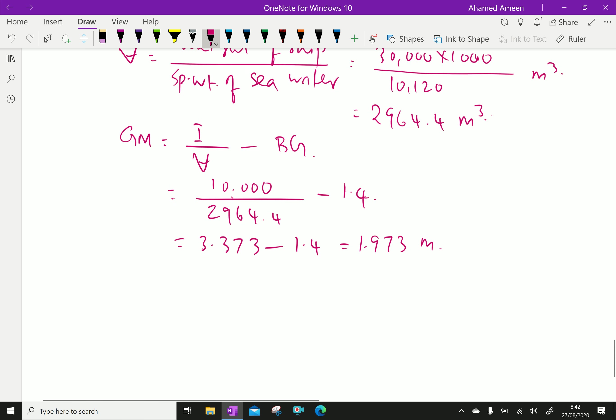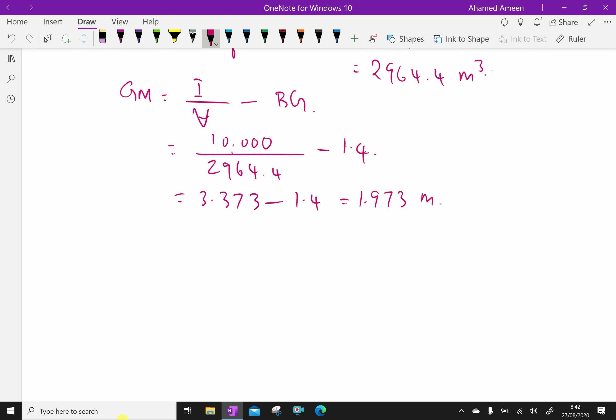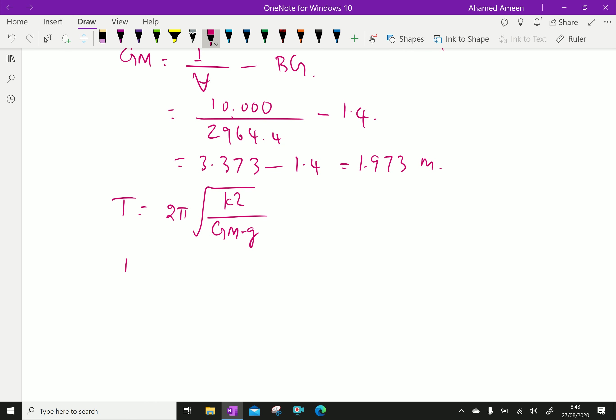We have the formula for time period: t equals 2 pi root of k square over gm into g. From that, t over 2 pi equals root of k square over gm into g, which gives radius of gyration k equals t over 2 pi into square root of gm into g.